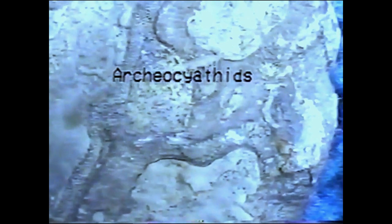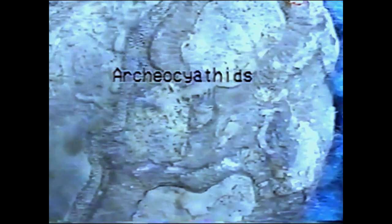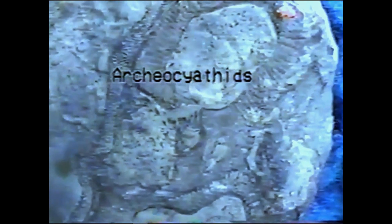'For instance, it cannot be doubted that all the Cambrian and Silurian trilobites are descended from some crustacean which must have lived long before the Cambrian age and which probably differed greatly from any known animal. Some of the most ancient animals known as fossils, such as the nautilus...'